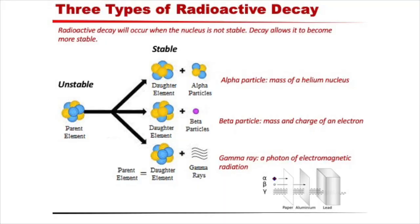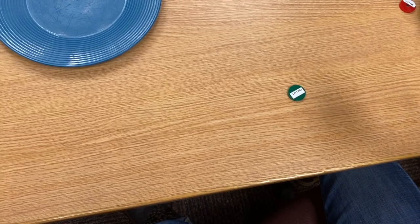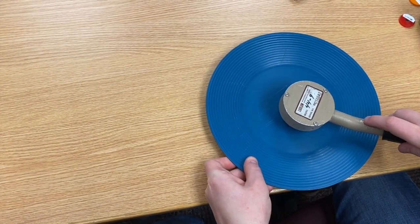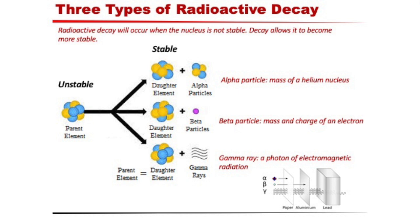Another type of radioactive emission is a beta particle. Beta particles have the same mass and charge as an electron, and as such are significantly smaller than alpha particles. Because of their smaller size, beta particles can move through matter a bit easier than alpha particles. Thicker materials, like aluminum and plastic, can still efficiently block them. The third type of radioactive emission is a gamma ray. A gamma ray is basically a particle of light; however, it is significantly higher in energy than the light we observe and detect with our eyes. Because of its high energy, gamma rays can travel very far through matter. As you can see, it takes very heavy metals, like lead, to effectively block this type of radiation.